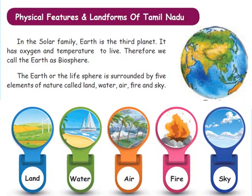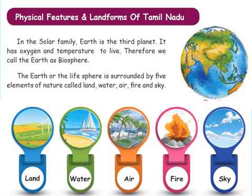The earth, or the life sphere — the biosphere — is surrounded by the five elements of nature: land, water, air, fire, and sky. Our earth is surrounded by these five elements of nature: land, water, air, fire, and sky.